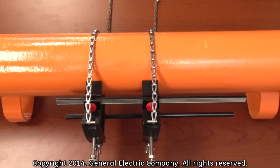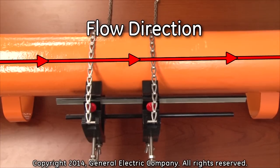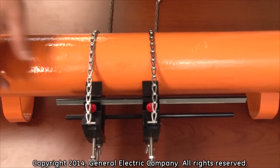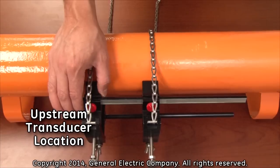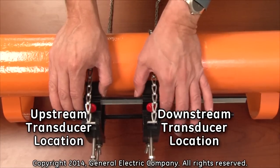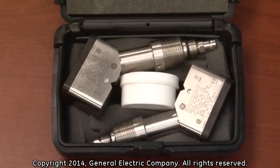The flow direction of the process must be identified. For the purpose of this installation, the direction of flow is from left to right. Therefore, this location will be the upstream transducer location and this location will be the downstream transducer location.